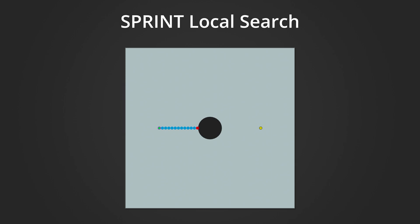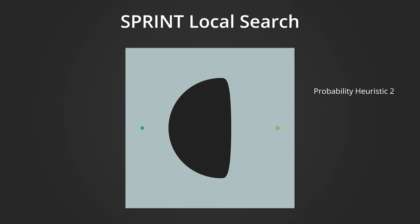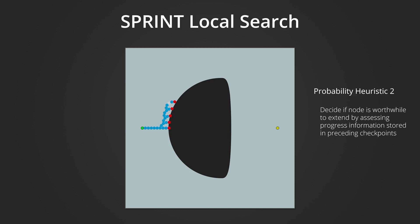If the local search hits a collision, the search stores the collision point at previous checkpoints for quick retrieval later, backtracks to a previous node, and creates a new checkpoint. All exploitation progress, exploration progress, and collision point information is stored at all previous checkpoints each time a node is added to the local search tree. The job of probability heuristic 2 is to decide whether a node is worth extending or not. The probability value is constructed by looking at all checkpoint nodes preceding the node and assessing the progress information stored there. If all checkpoints indicate either exploitation or exploration progress, the probability value will be high; if not, the probability will dip below a cutoff value and the search will backtrack.